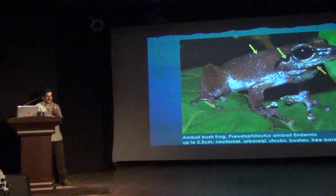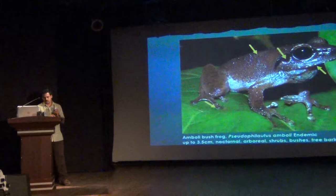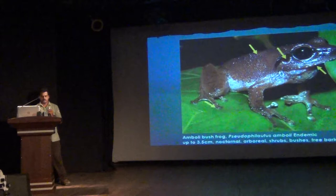Then we have arboreal species. One of the commonest is Pseudophilautus amboli, the Amboli bush frog. It has a distinctively colored tympanum, a lemon-yellow throat when it croaks, and a smooth dorsum surface. It calls something like this.